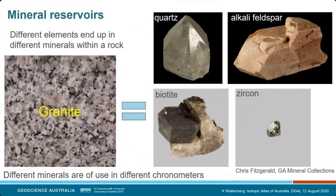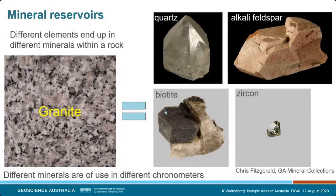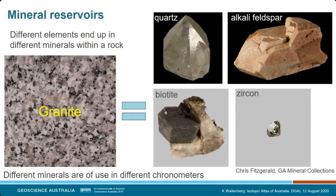Going from the huge planet scale down to the microscopic scale, the last reservoir I want to talk about is mineral reservoirs. When you crystallize a rock and form minerals, different elements end up in different minerals within that rock. For example, this granite is composed of various different minerals: quartz, feldspars, biotite, and zircon in a small amount. These different minerals have different uses for different isotope studies, so depending on what you want to understand, you might look at one or another of these minerals as your system of choice.